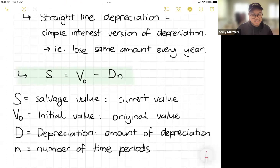So S stands for your salvage value, which means it's how much it's worth now. It's what it's worth after all the time. V0, I know that zero looks a little bit weird, but V0 means it's your value when time equals zero. So that's where the zero comes from. It's your initial value or your original value.